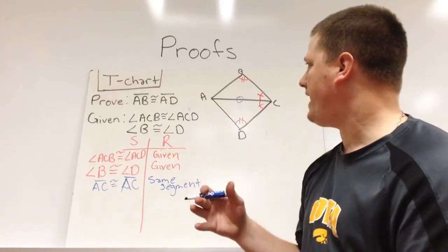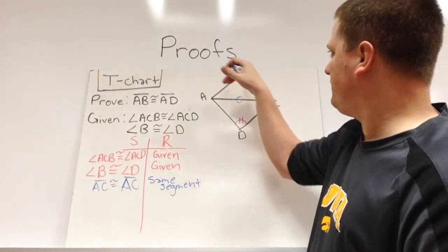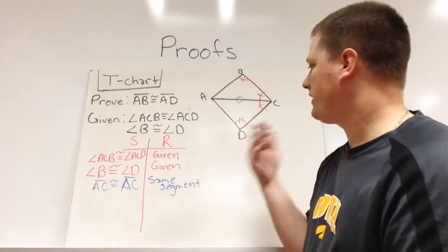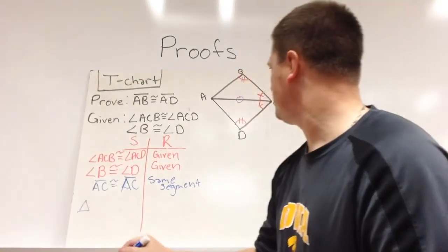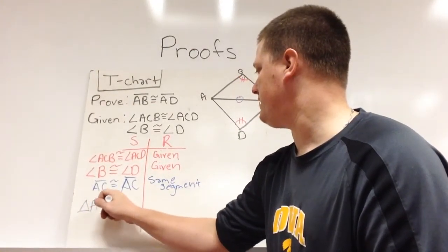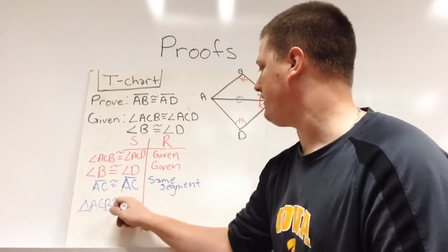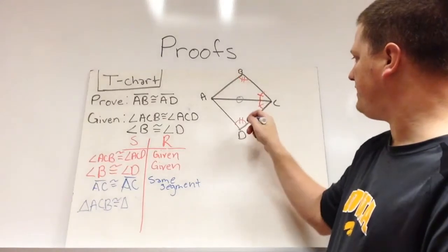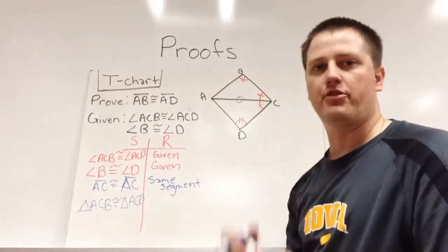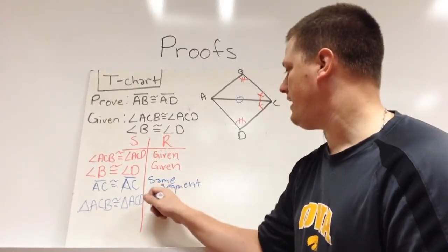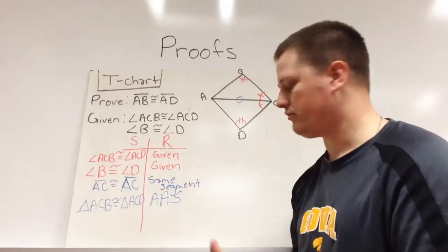So what we have here is it looks like we have side, angle, angle, or angle, angle, side. So we're going to match up the triangles. Triangle ACB is congruent to triangle ACD. And the reason that they're congruent would be angle, angle, side congruency. So we use AAS.